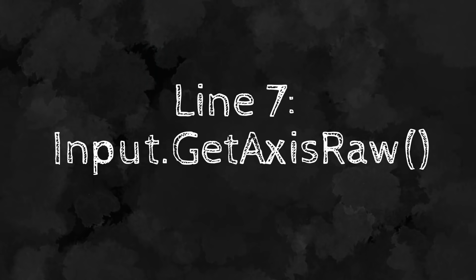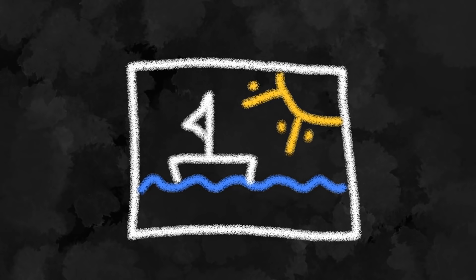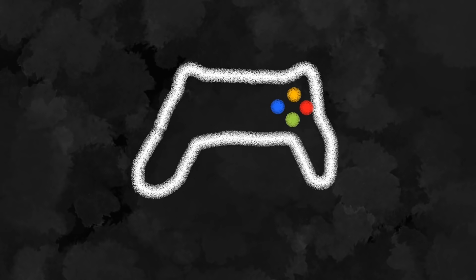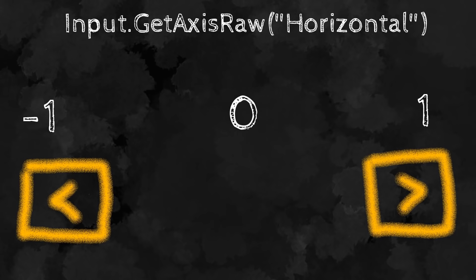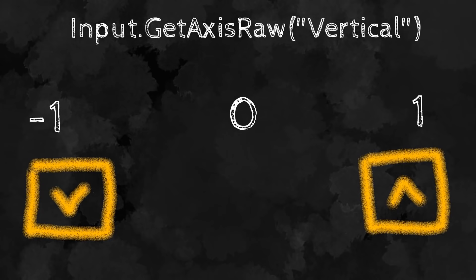Line number seven is Input.GetAxisRaw. Games need to manage player input, and we'll focus on keyboard inputs here. Input.GetAxisRaw("Horizontal") returns 1 if you press the right arrow key, -1 for the left arrow key, and 0 if nothing is pressed. Similarly, Input.GetAxisRaw("Vertical") returns 1 for the up arrow key, -1 for the down arrow key, and 0 otherwise. These two lines are used very often when creating player movement.